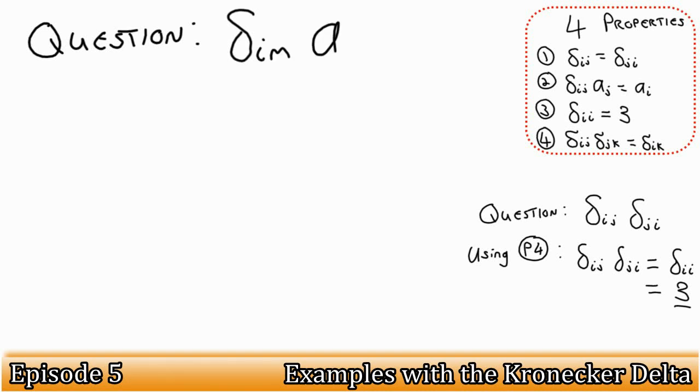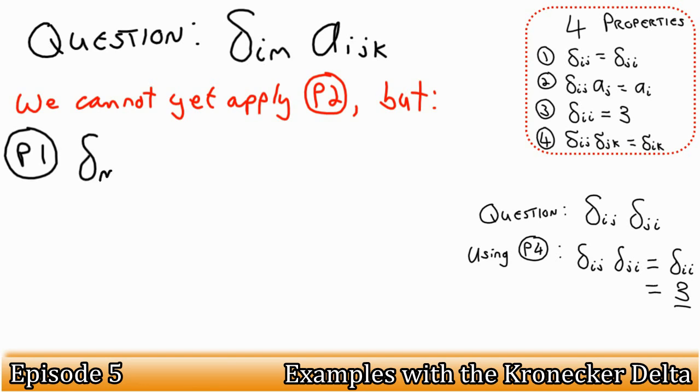What if we had delta in ai jk? Can we apply property 2? Not yet, because the inner indices of the product aren't the same. But we can apply property 1, which changes i and m around. This then allows us to apply property 2. The result is a mjk.